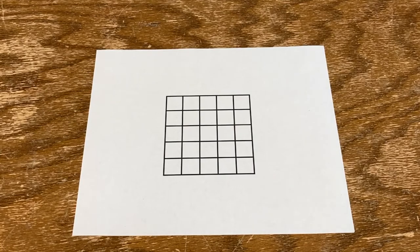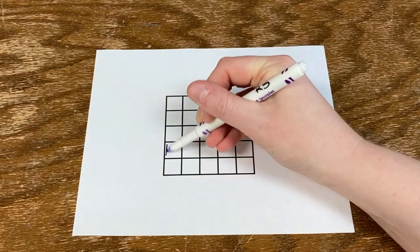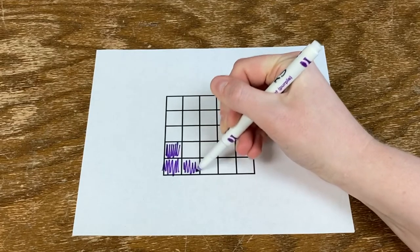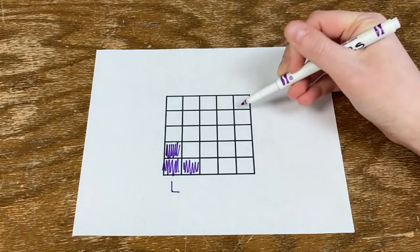Before you begin, you need to know what a Trominoe is. There are two types of Trominoes. One is an L or corner shape, and the other is three boxes in a row, an I shape.